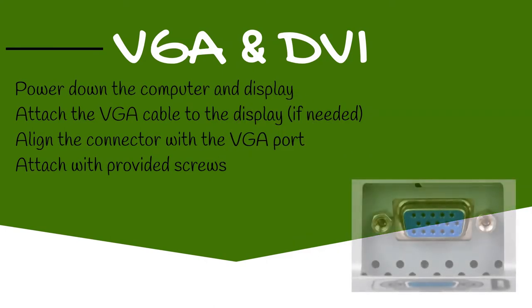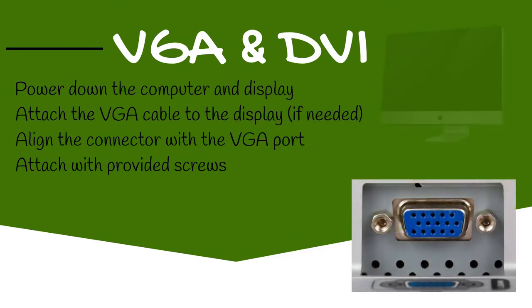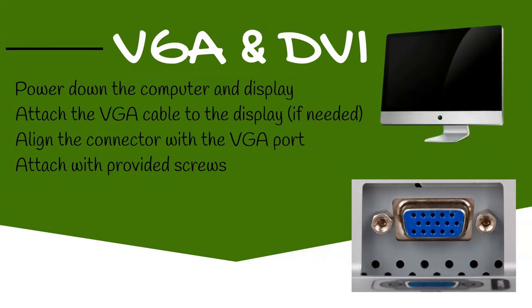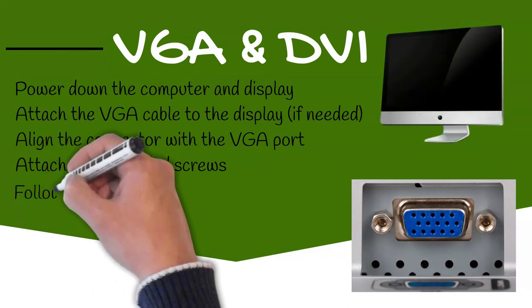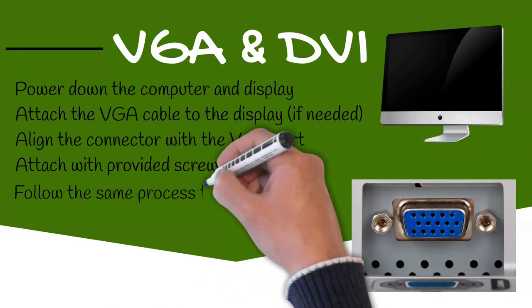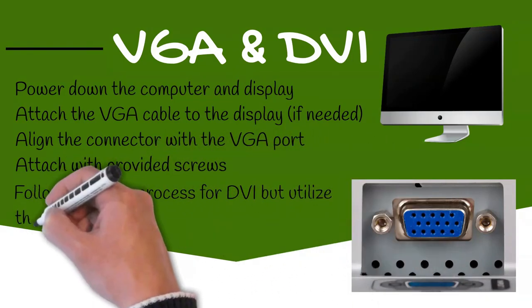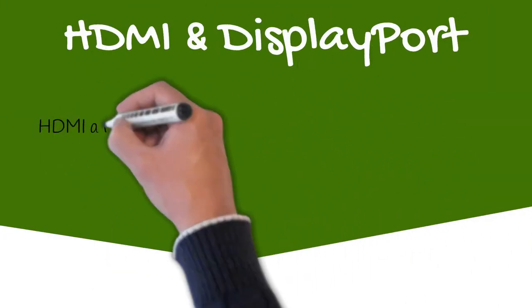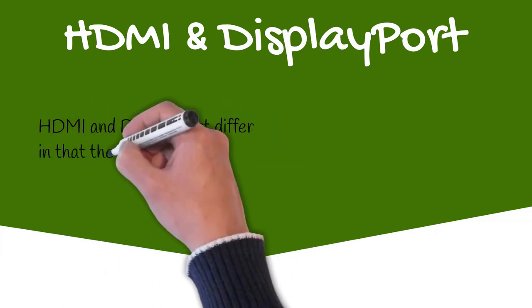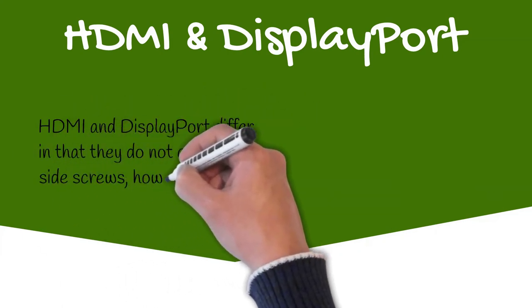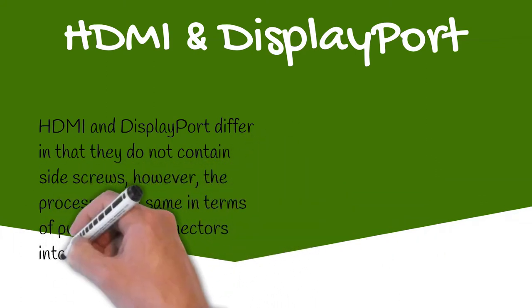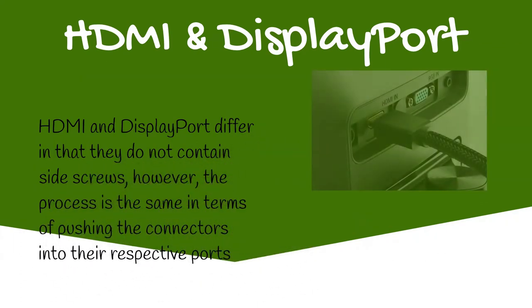Once in place, you can complete attaching the cable with the screws provided on the connector. To attach a display with a DVI connector, one can follow the same process as with VGA but utilizing the DVI port. Connecting HDMI and DisplayPort differs from VGA and DVI in that neither contain the side screws. However, the process is the same — one can simply push the connectors into their respective ports.